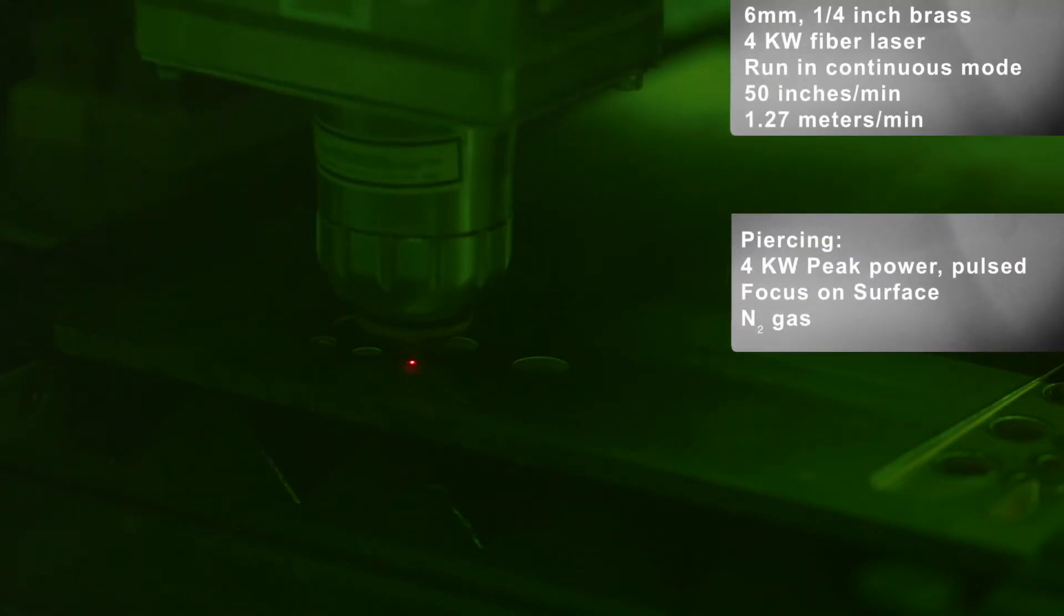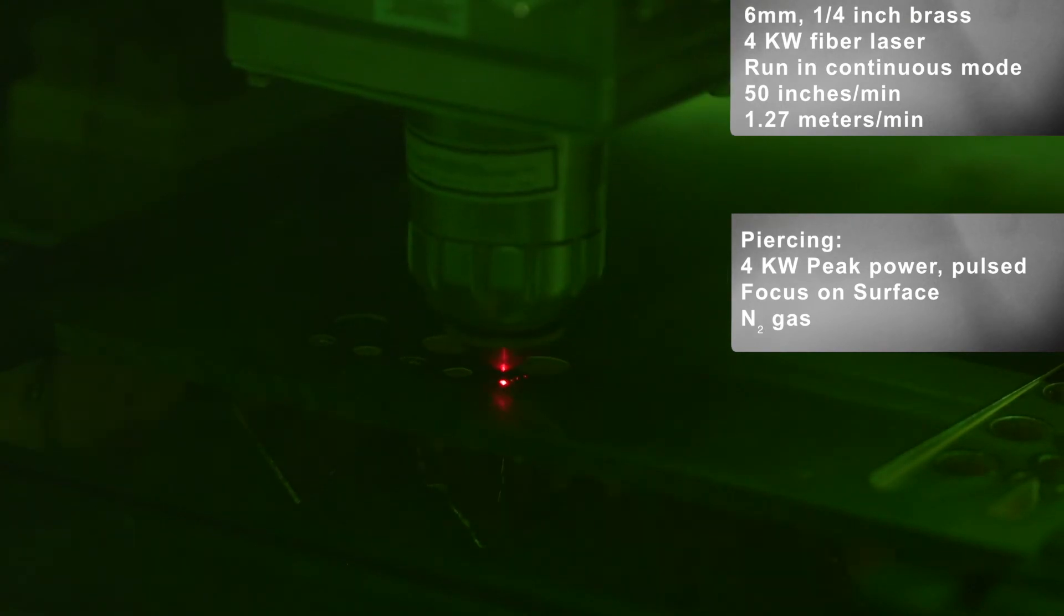In the piercing stage, the material escapes the surface in a particulate form, and the laser is in the pulse mode and drills through the thickness of the material, and then it transitions to cutting.